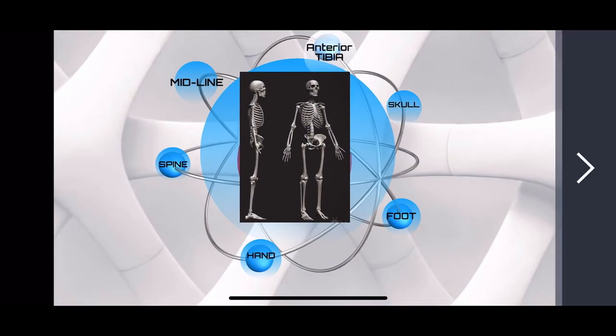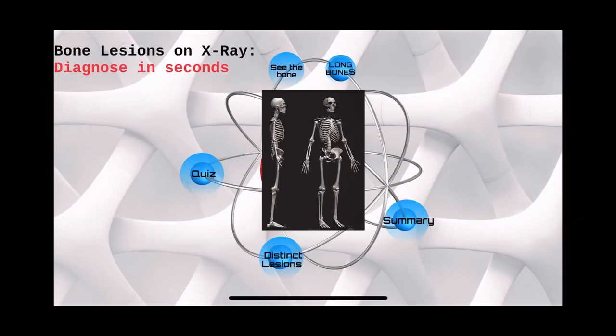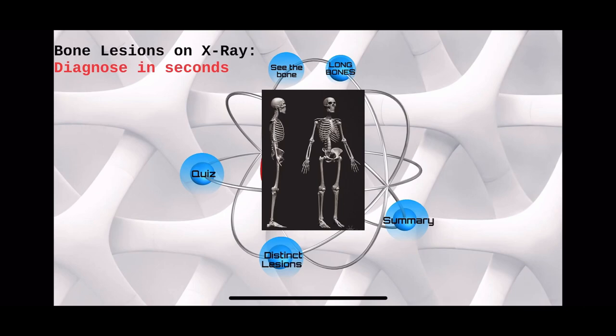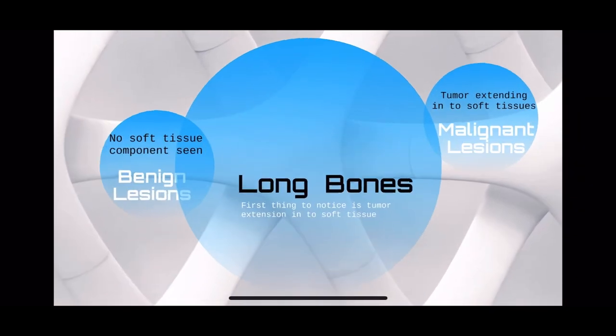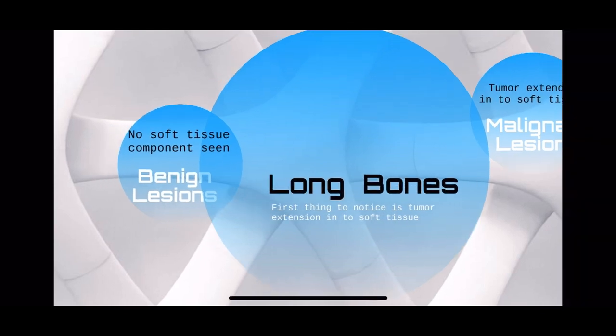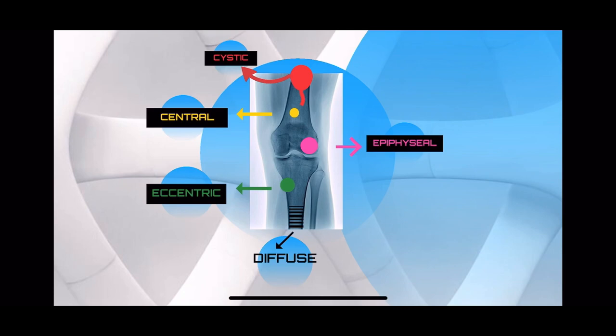The most common X-ray you're going to get in examination is that of a long bone. In long bones, the first thing you notice is whether the tumor or lesion is extending into the surrounding soft tissues. In malignant lesions, the tumor will be invading the soft tissue, while in benign lesions, the soft tissue is spared.